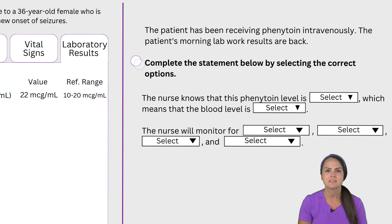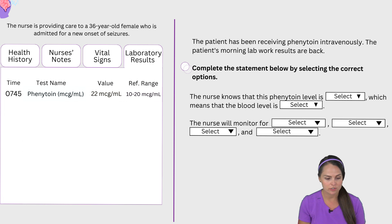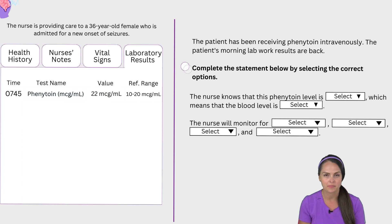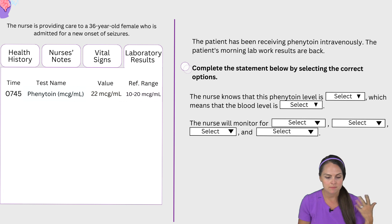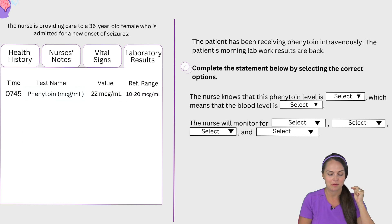So let's do a pharm review over phenytoin. This is an anticonvulsant, meaning it decreases seizure activity, which is what this patient needs since they were admitted for new onset of seizures. It can be used to treat tonic-clonic seizures or focal seizures. There are some things you want to remember about this medication — the information not only helps you in practice but for other potential questions you may get about phenytoin. Here are some points to remember.